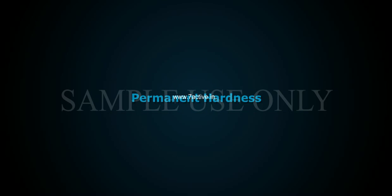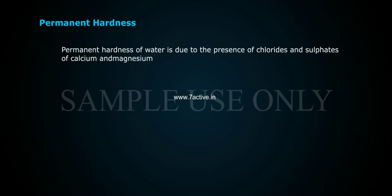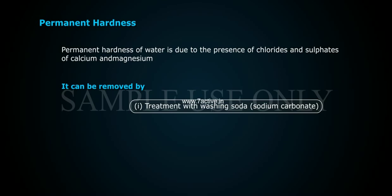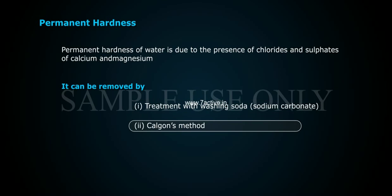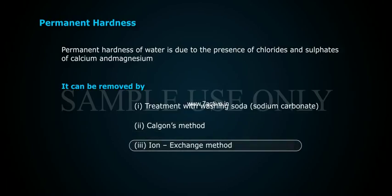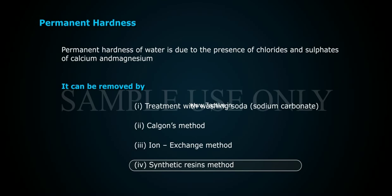Permanent hardness of water is due to the presence of chlorides and sulphates of calcium and magnesium. It can be removed by: 1. Treatment with washing soda (sodium carbonate), 2. Cologne's method, 3. Ion exchange method, 4. Synthetic resins method.